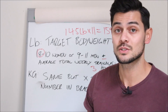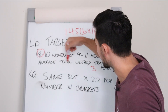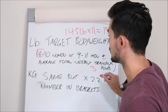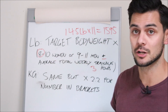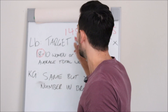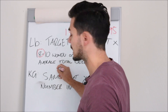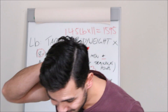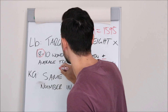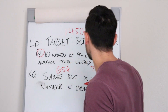Now in kilos, it's the same thing, but we have to multiply the number we calculated — the 11 — by 2.2. And obviously the target body weight will be a different number. So 145 pounds is really close to 65.7 kilos — let's say it's 65 kilos.